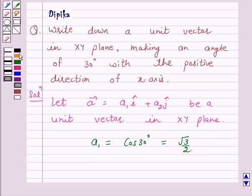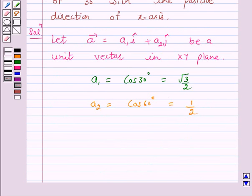Therefore, a2 equals cos 60 degrees, and this equals 1 over 2. Therefore, the unit vector a equals root 3 over 2 i plus 1 over 2 j.